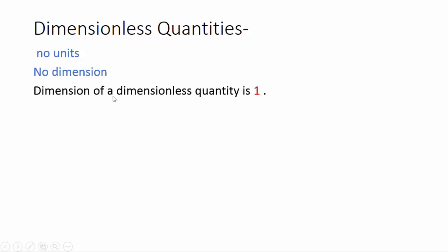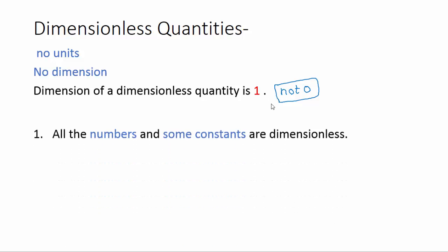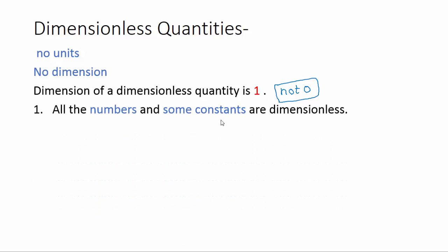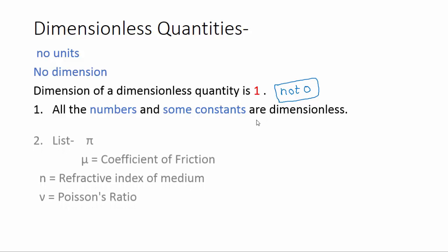Dimensionless quantities are quantities which have no units — they have only numbers but no units, so they also have no dimension. The dimension of a dimensionless quantity is considered as 1. Keep in mind it's not 0; most people think it's 0 but it's 1. All numbers like 0 to 9 and some constants are dimensionless.